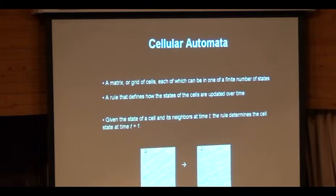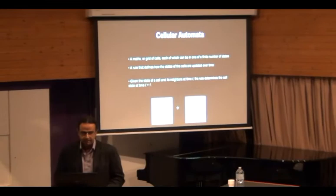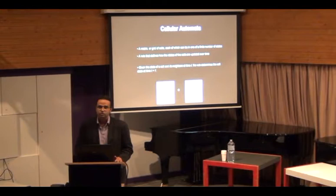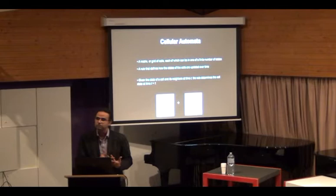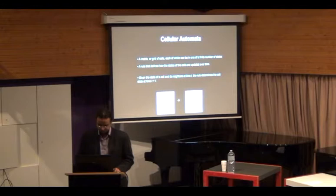Cellular automata is a mathematical structure — a grid of cells or a matrix where each cell can be in different states from zero to n. We can have a tick of time, producing different generations. The next generation is produced from the previous generation by means of a rule. Cellular automata is good for music because of this characteristic that it evolves through time.